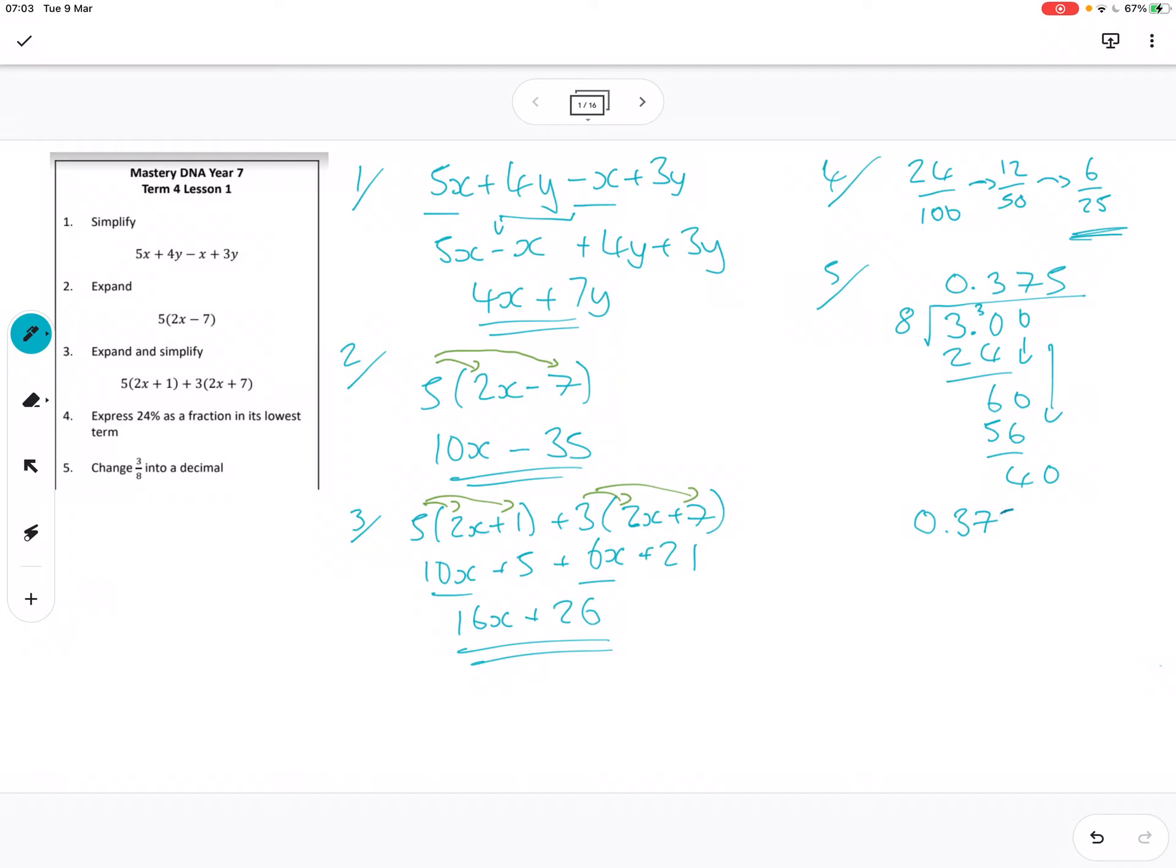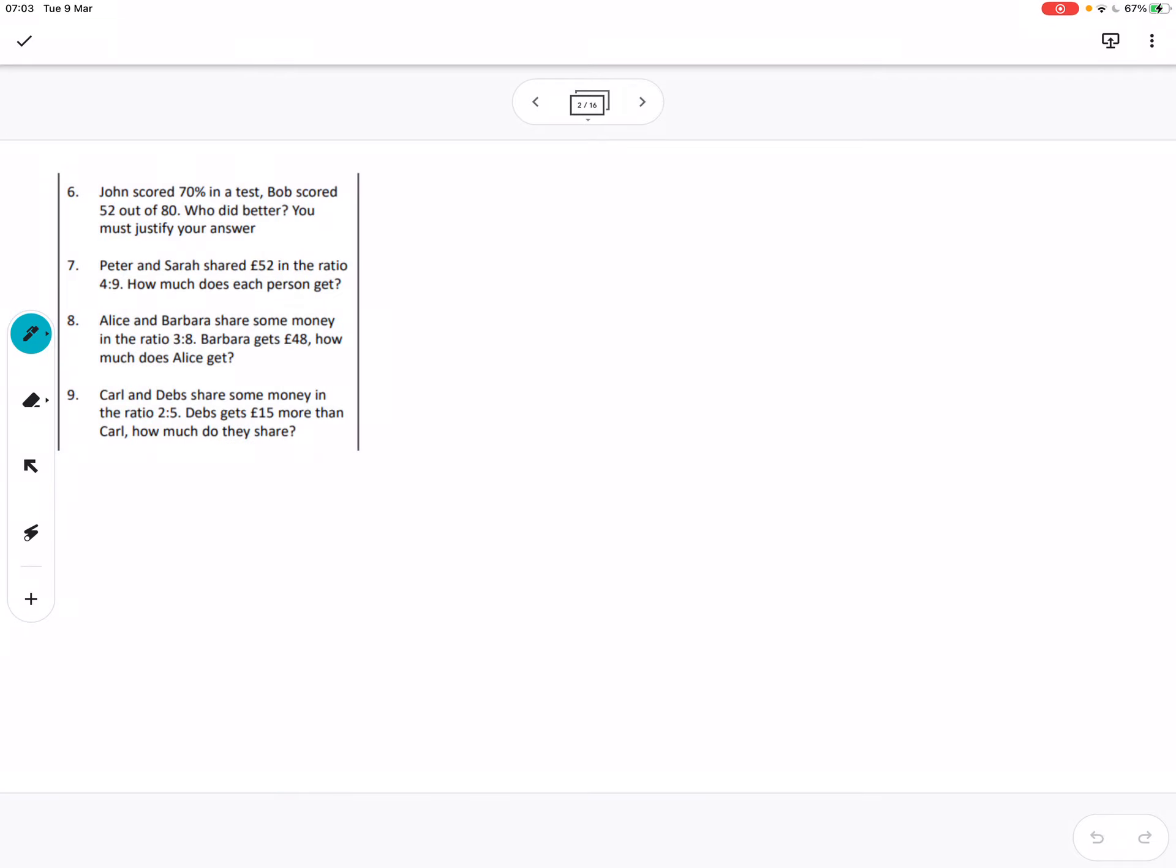The next one: John scored 70% of a test, Bob scored 52 out of 80, who did better? So what I would generally do is convert the score that's something out of something into a percentage and see who got the higher percentage. So 52 over 80 times 100, just make the fraction, multiply it by 100, and that's going to give you Bob's percentage. This is question 6.